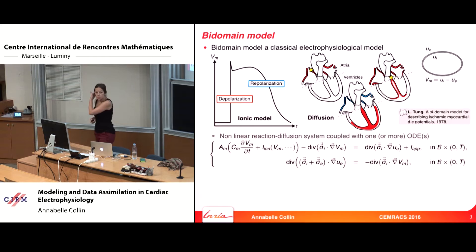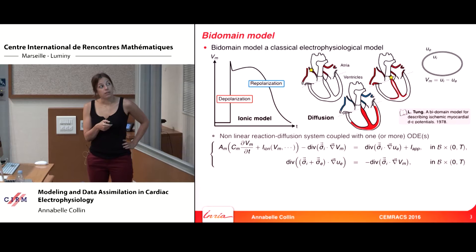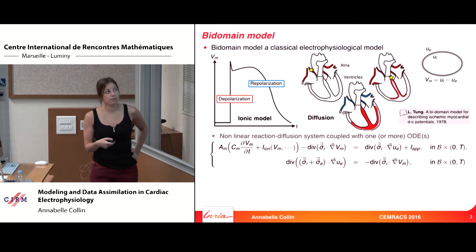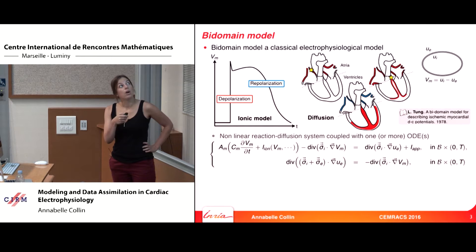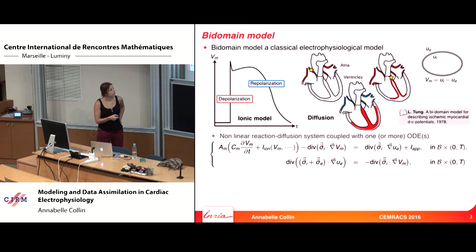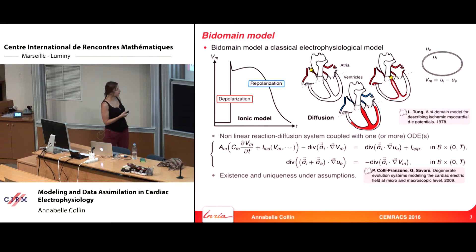The most common model in cardiac electrophysiology is the bidomain model, which is a nonlinear reaction-diffusion system. You have nonlinear terms which depend on many variables, and this allows representing the cell scale. You also have different diffusion tensors. It is called the bidomain model because you can write it with the extracellular potential, the intracellular potential, or the transmembrane potential.